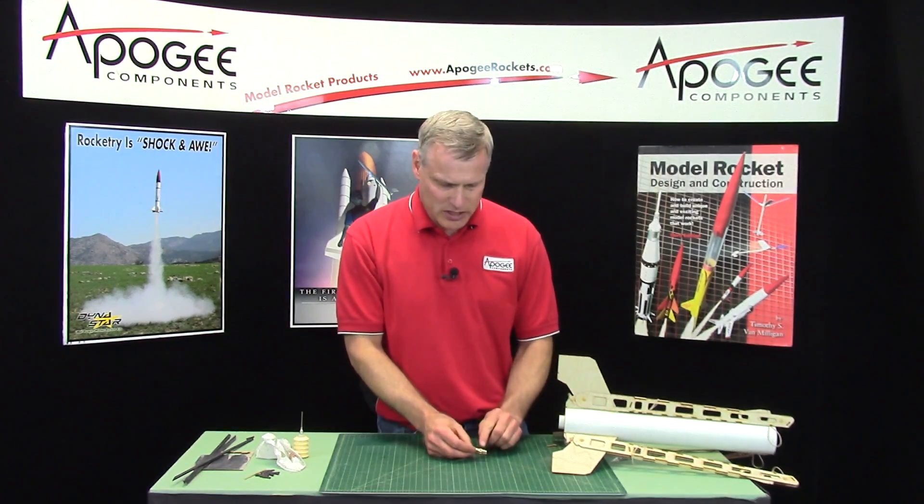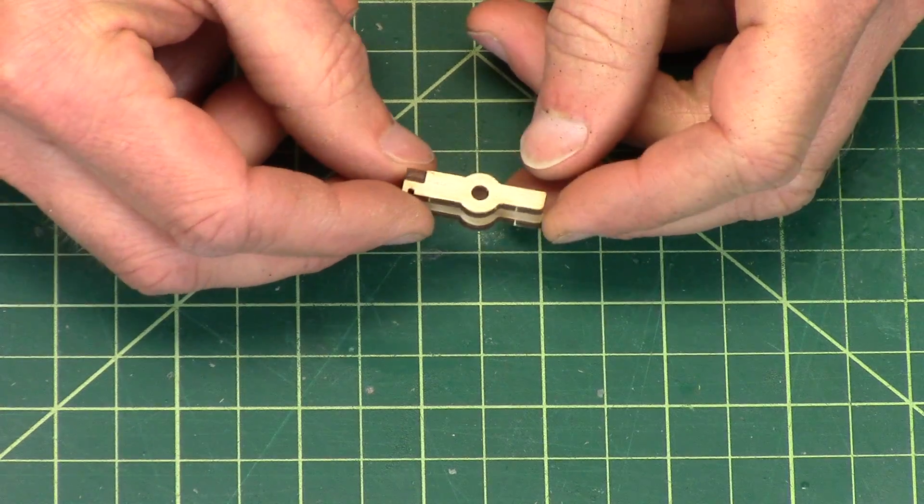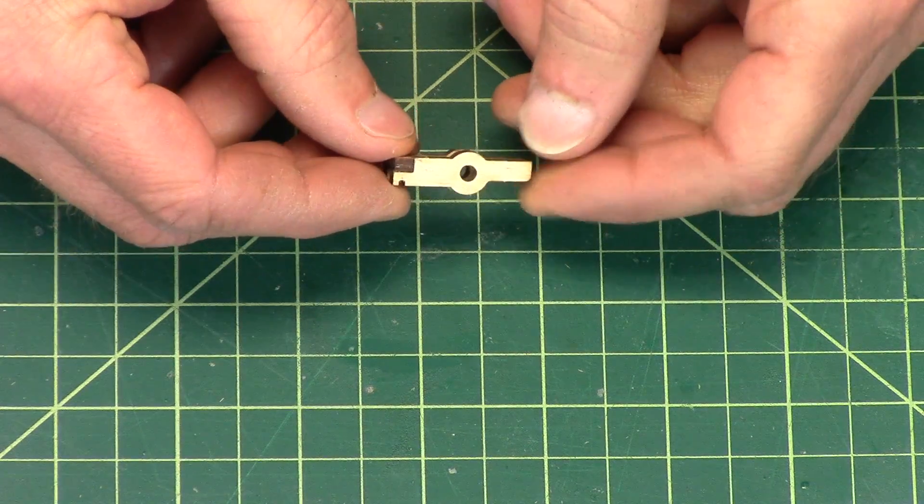This video will show you how to assemble the latch. This is what the latch looks like and it's made out of three parts.